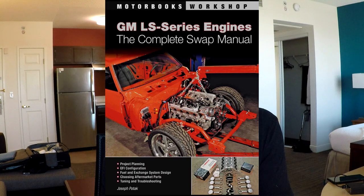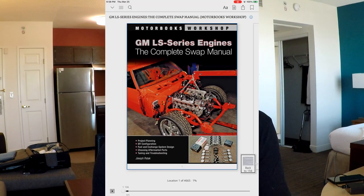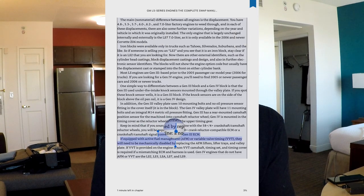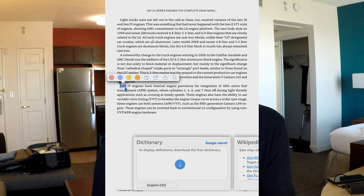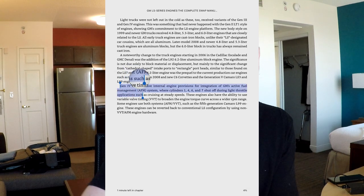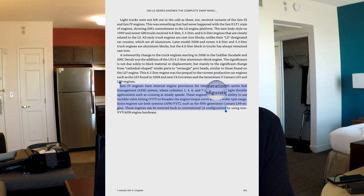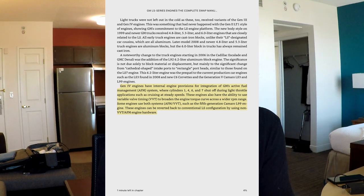The third book, GM LS Series Engines: The Complete Swap Manual, also by Joseph Potok, states on page 7 that if you're going to use a Gen 3 computer on an engine that has active fuel management, you will need to mechanically disable it by replacing the AFM lifters. Further on page 171, the author states that engines using both active fuel management and variable valve timing — such as the fifth generation Camaro L99 — can be reverted back to conventional LS configuration using non-variable valve timing, non-AFM engine hardware. Again, no mention of leaving the DOD feature in the engine and simply disabling it with software.